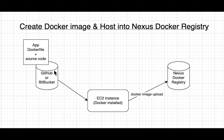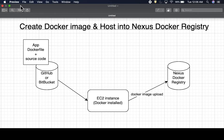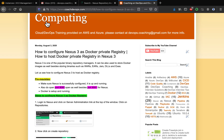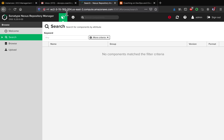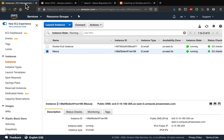The use case is: we already have a project set up in Bitbucket that has a Dockerfile, and we have an EC2 instance where Docker is installed. We are going to configure Nexus to host a Docker registry. Nexus is already up and running, and we have another EC2 instance with Docker installed — that's what we'll use for this lab.